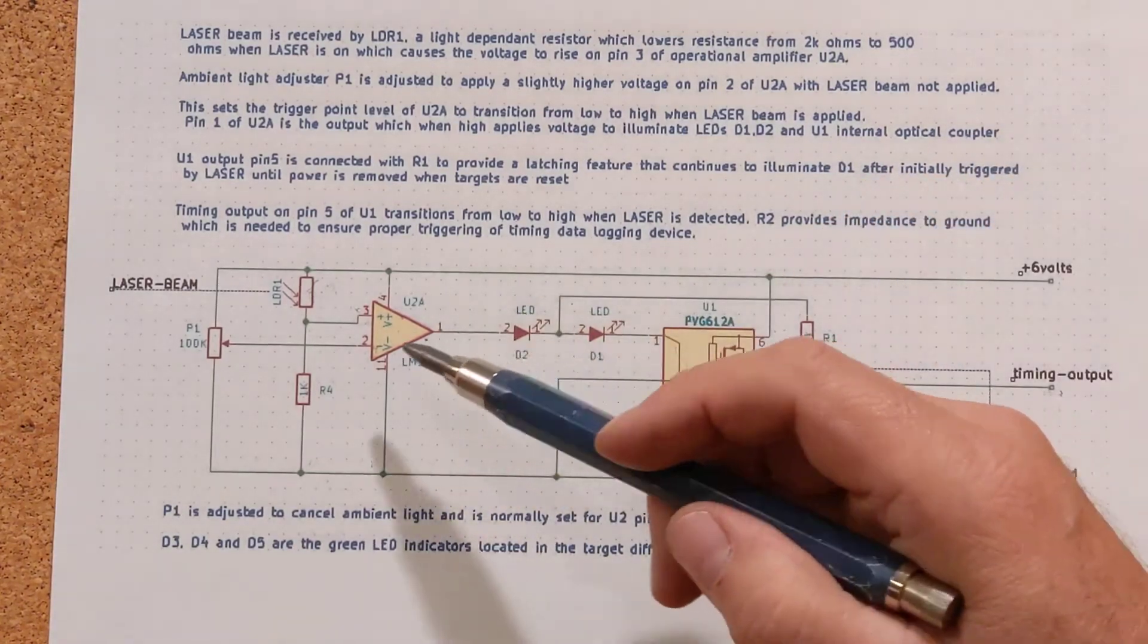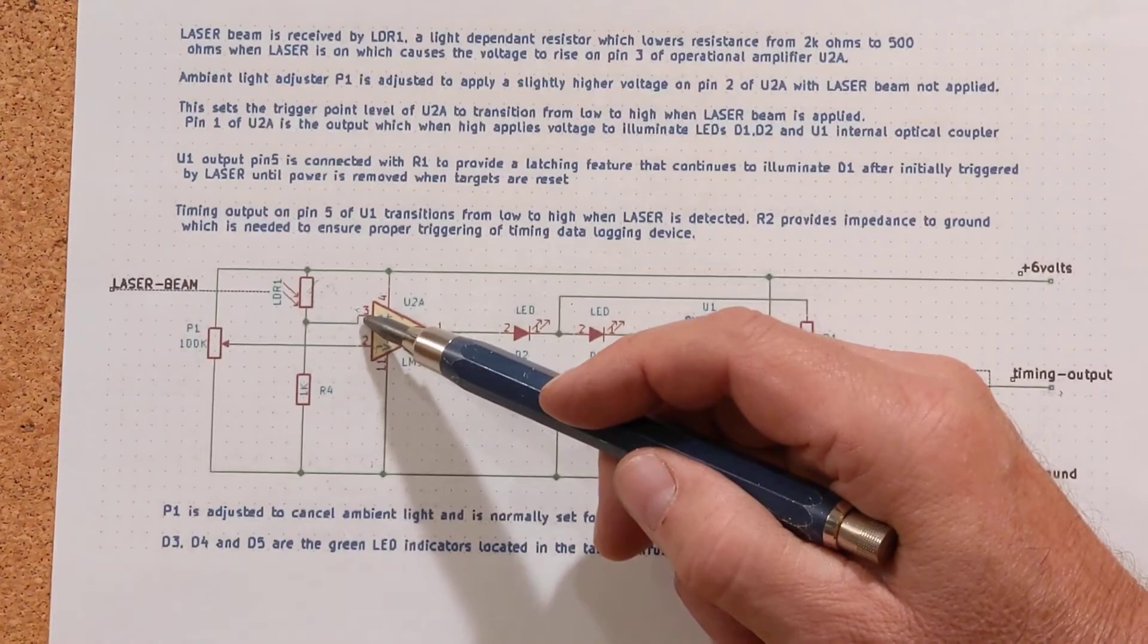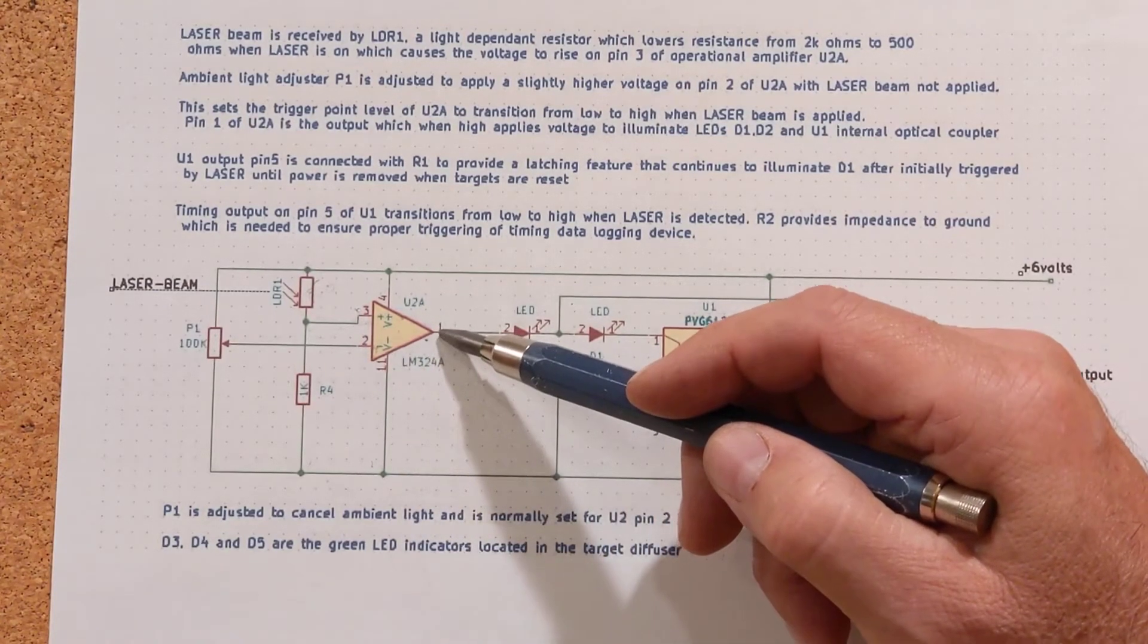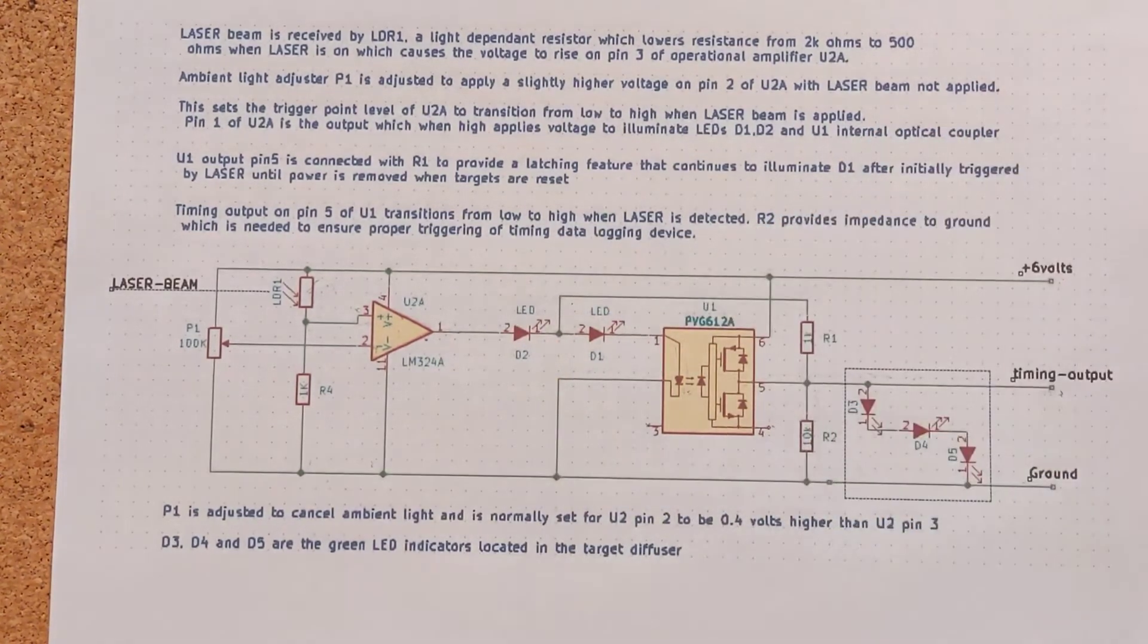But as soon as the pin 3 voltage rises above pin 2, then this output transitions to almost a rail. It goes almost to six volts.